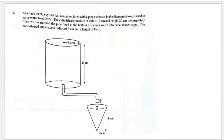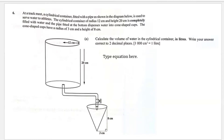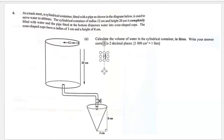The pipe fitted at the bottom dispenses water into cone-shaped cups. The cone-shaped cups have a radius of 3 centimeters and a height of 8 centimeters. Question 8a says: calculate the volume of water in the cylindrical container in liters, correct to two decimal places. We're told that 1000 cm³ equals 1 liter.